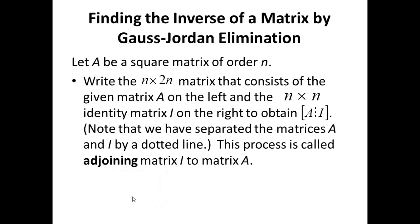Now I did mention Gauss-Jordan elimination as a method for arriving at the inverse of a matrix. How is this done? Let A be a square matrix of size N by N. Step 1: We write the N by 2N matrix that consists of the matrix A on the left and the N by N identity matrix I on the right in this form [A, I]. We have used dotted lines to separate A and I for convenience only. This process is called adjoining matrix I to matrix A.